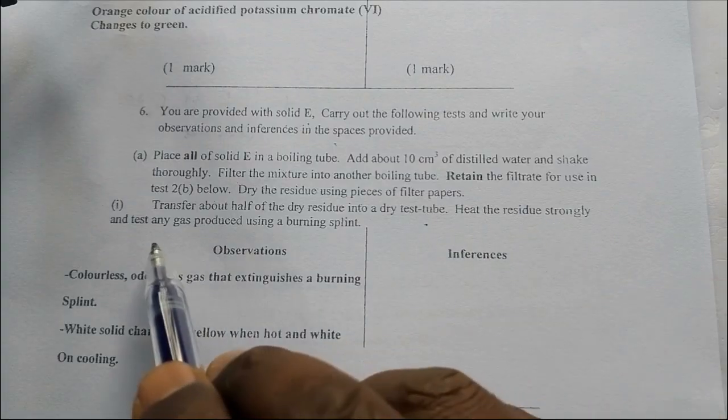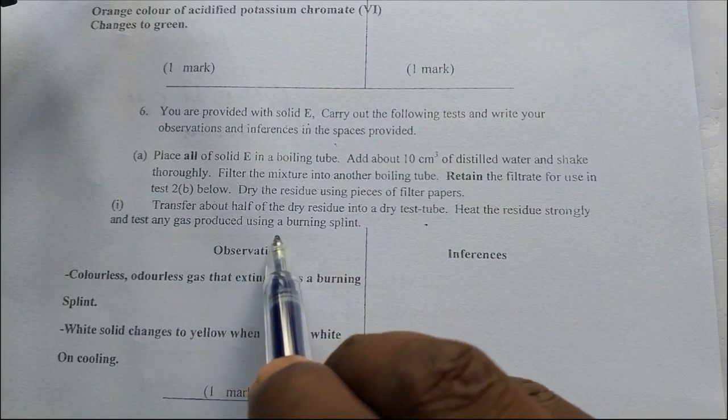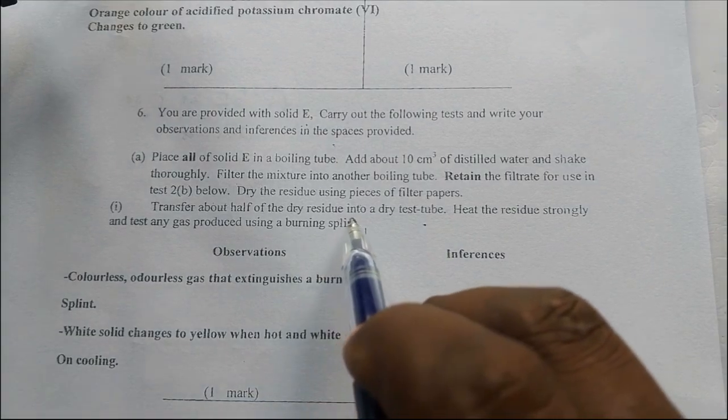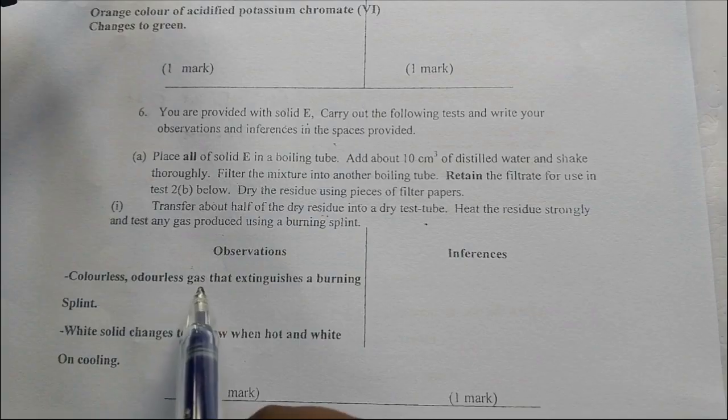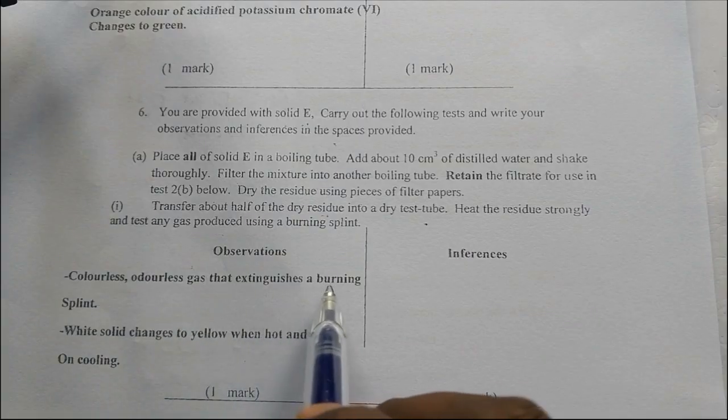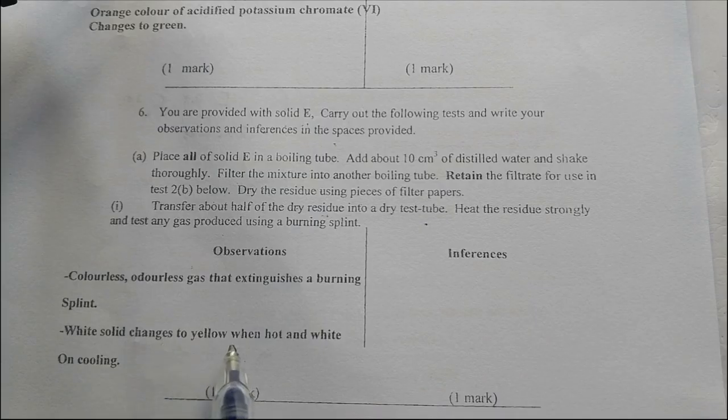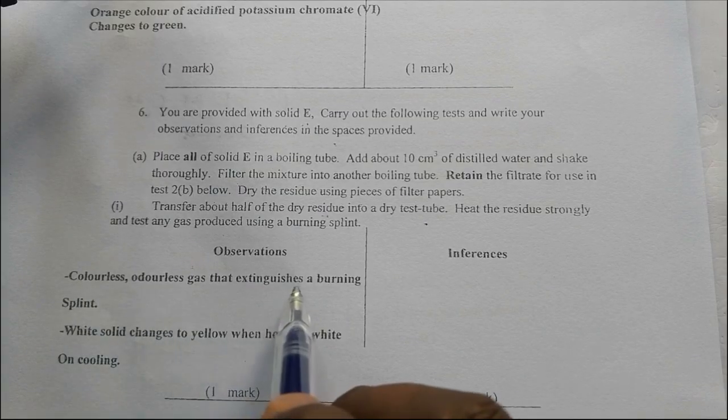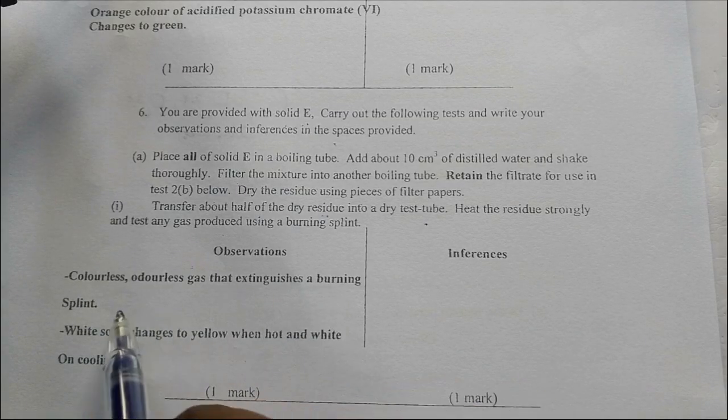Heat the residue strongly and test any gases produced using a burning splint. A colorless gas that extinguishes a burning splint. A white residue changes to yellow when hot and white on cooling.